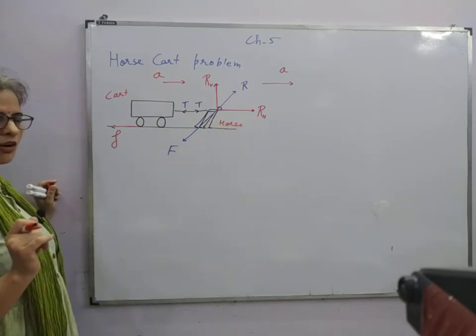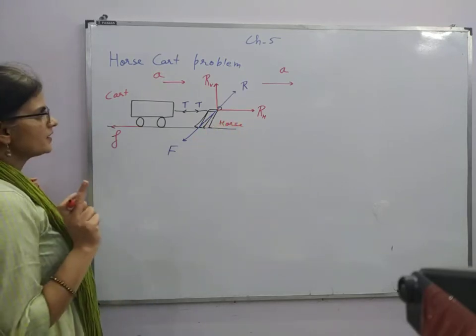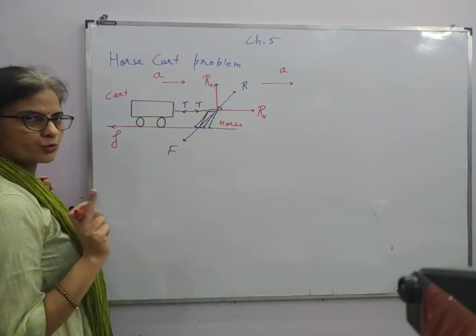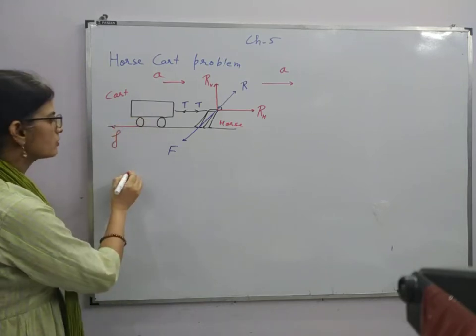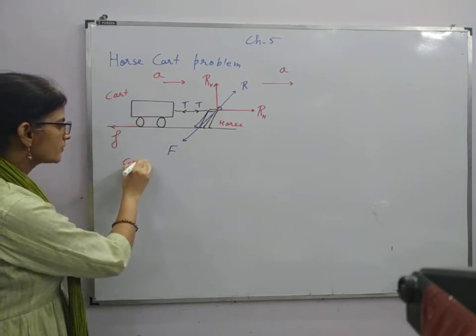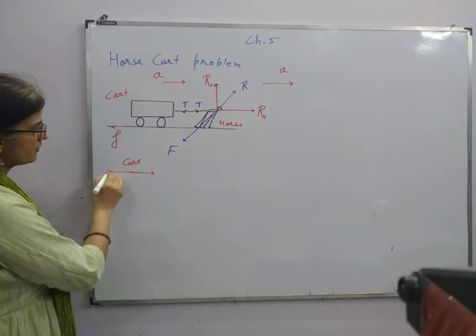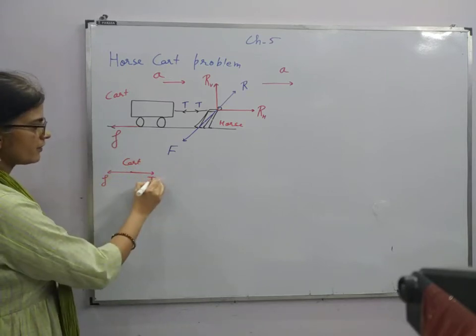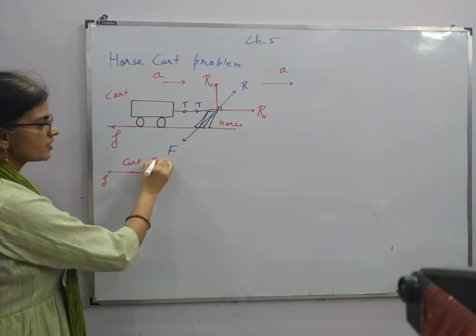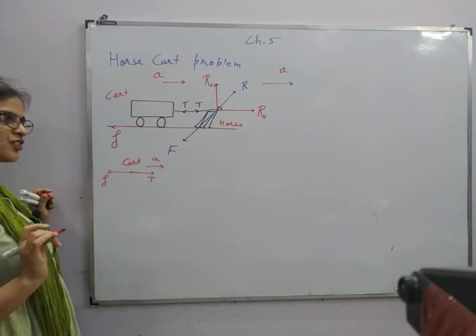Then from second law I will get two equations, that is on cart we have this tension in forward direction, this friction in backward direction. The system is moving forward with acceleration A.